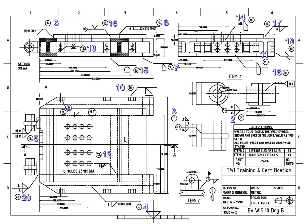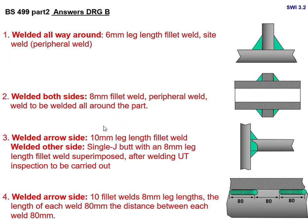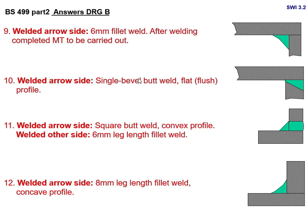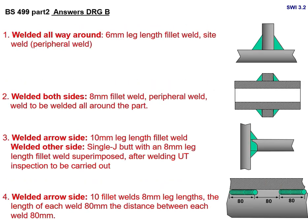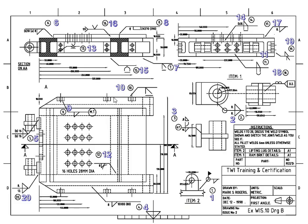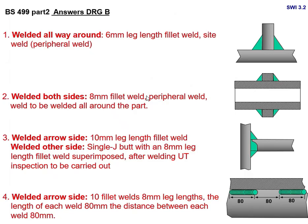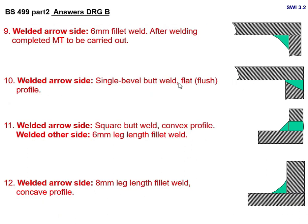Joint number 9: welded arrow side — 6 mm fillet weld. After welding, you have to carry out MT (magnetic particle) inspection. That is joint 9. Joint number 10 is a single bevel butt weld with a flat plus profile finish — you can see the V-groove and flush symbol.